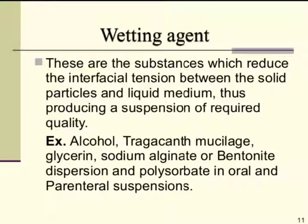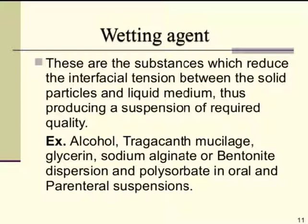Examples of wetting agents include alcohol, tragacanth, glycerin, sodium alginate, bentonite, dispersions, and polysorbate — used in oral and parenteral suspensions. In summary, the wetting agent reduces the interfacial tension between solid and liquid phases and is added in the formulation of suspension.